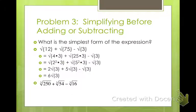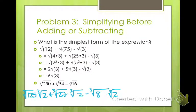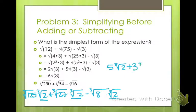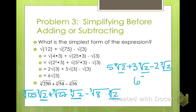What about the cube root of 250 plus the cube root of 54 minus the cube root of 16? See if you can simplify — are there perfect cubes that go in? Cube root of 250 is cube root of 125 times cube root of 2, which is 5 cube root of 2. Cube root of 54 is 3 cube root of 2. Minus cube root of 16 is 2 cube root of 2. So all radicands are the same: 5 plus 3 minus 2 gives us 6 cube root of 2.